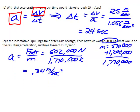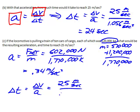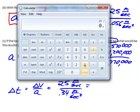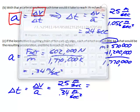How much time are we going to need to reach 25 meters per second? Delta t is equal to delta v over a. 25 meters per second divided by 0.34 meters per second squared gives us 74 seconds.